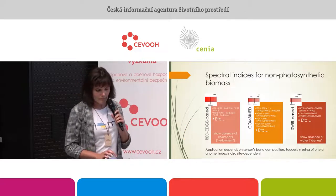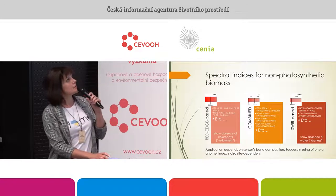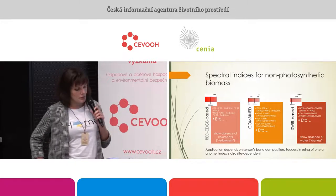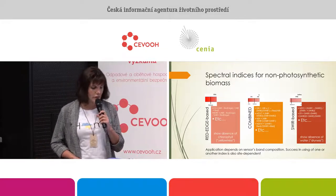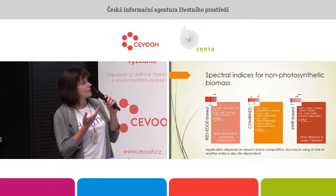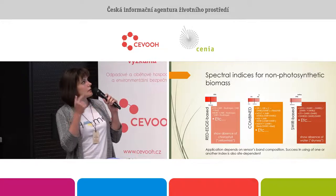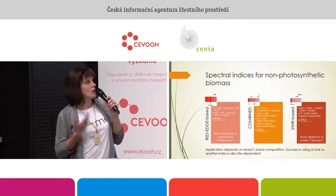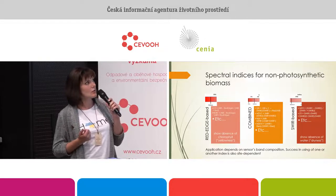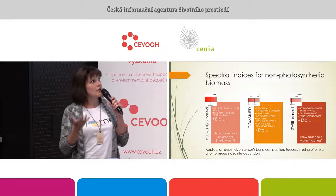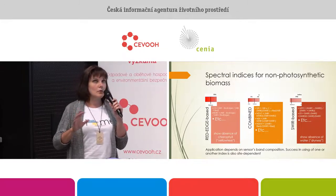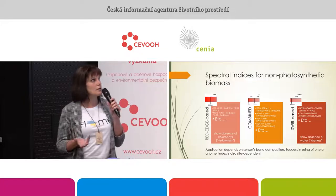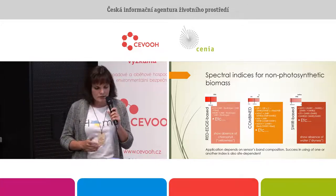There are plenty of spectral indices suggested in the literature. Some are based on the red edge band, which indicates absence of chlorophyll — essentially the yellowness of vegetation. Some are based on shortwave infrared bands, more connected with water content, indicating dryness. Other indices are combined, somewhere in the middle.